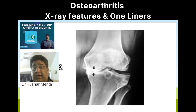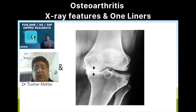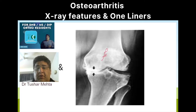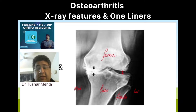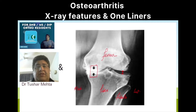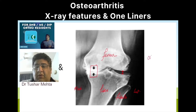Hello everyone, this is Dr. Tushar. Today's topic is in front of you. Just by looking at this X-ray, what is the one radiological diagnosis that comes to your mind? I'm sure you all can see the femur, tibia, and fibula. This is lateral, this is medial. We can see the lateral joint space, but we cannot see the medial joint space — there is a reduction of the medial joint space.